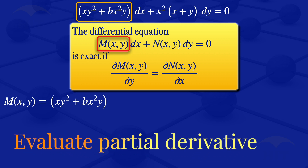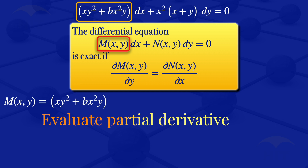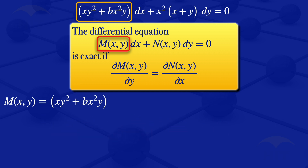I then go on and evaluate the partial derivative of M with respect to y. For this partial derivative, we treat x as if it's a constant. Differentiating xy² + bx²y with respect to y gives us ∂M/∂y = 2xy + bx².